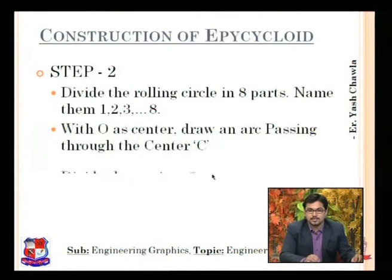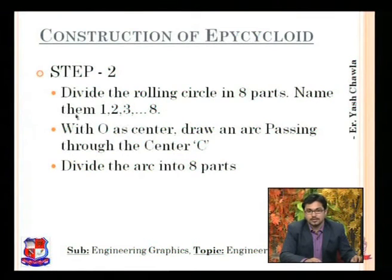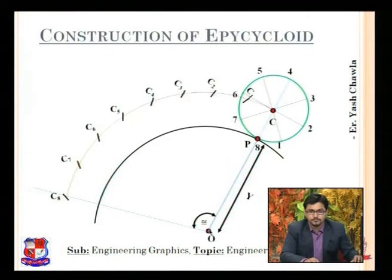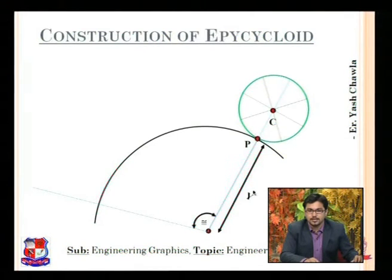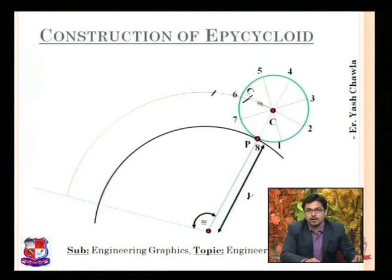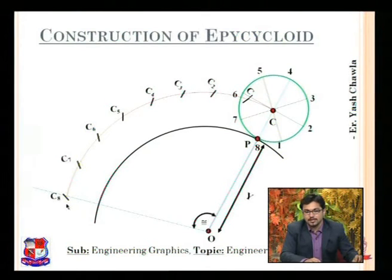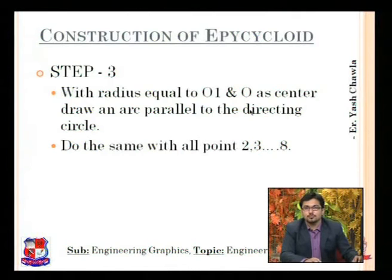Now divide the rolling circle into eight parts and name them 1 to 8. With O as center and arc passing through C, divide the arc into eight parts as well. We first divide the generating circle into eight parts, then with radius equal to the radius of the generating circle plus the radius of the directing circle, cut an arc and divide it into eight parts. The angle divided by eight gives the spacing; successive arcs are cut to get all points up to C8.